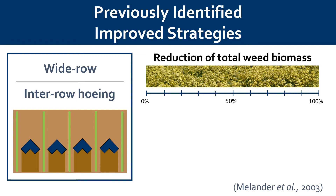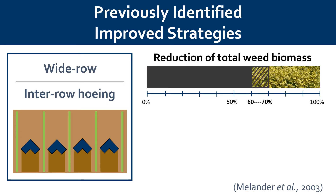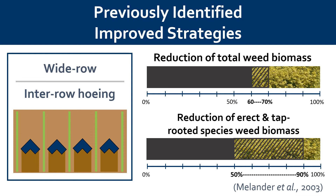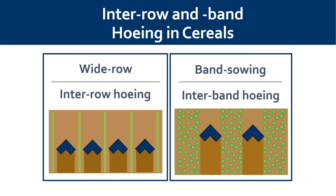This wide-row system with inter-row hoeing was largely inspired by organic grain growers operating in northern Europe. In a study performed in Denmark back in 2003, which observed the effect of inter-row hoeing in a crop of winter wheat grown at this wide row spacing, researchers found that compared with plots that were not weeded, inter-row hoeing reduced total weed biomass by 60 to 70%. When erect and tap-rooted weed species were considered, weed biomass was reduced by 50 to 90%.